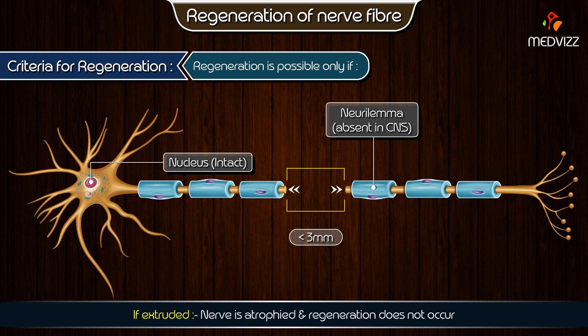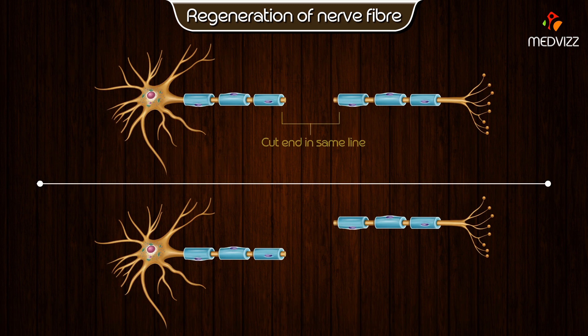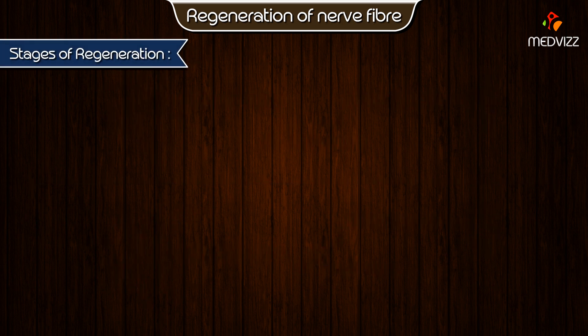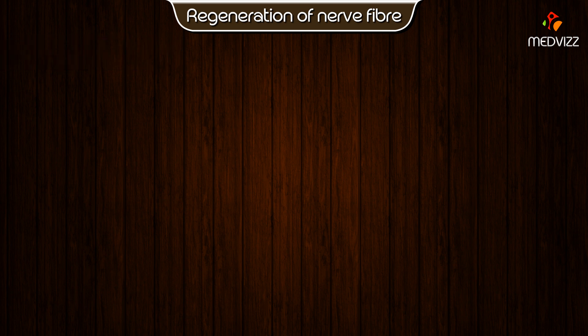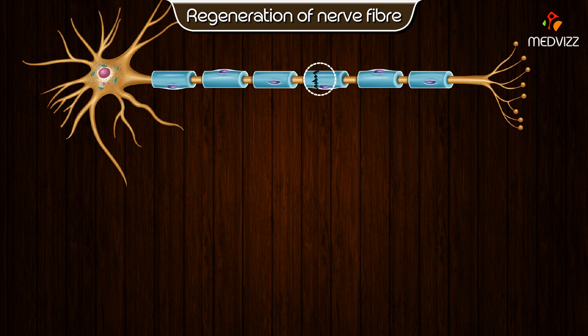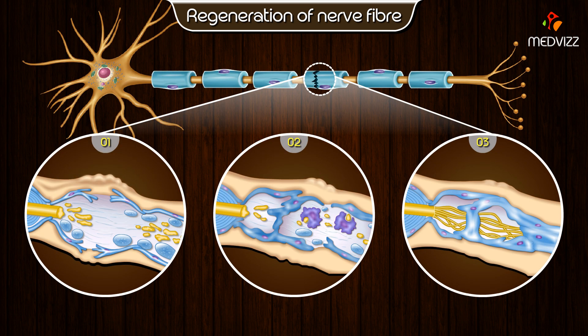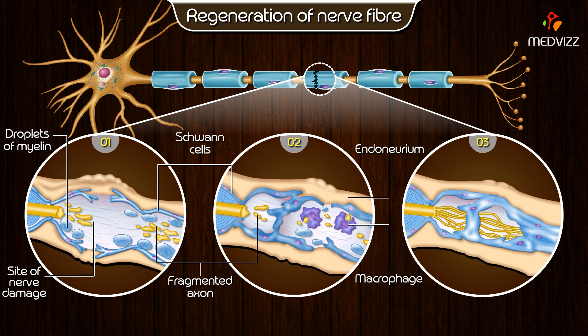Third, the nucleus must be intact. If it is extruded from the nerve cell body, the nerve is atrophied and regeneration does not occur. Fourth, the two cut ends should remain in the same line. Regeneration does not occur if any one end is moved away.